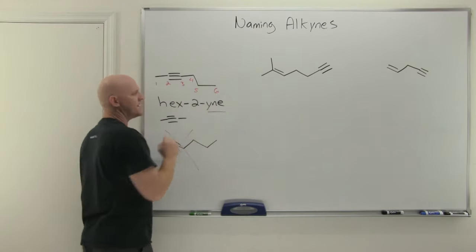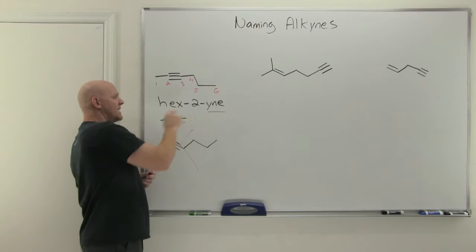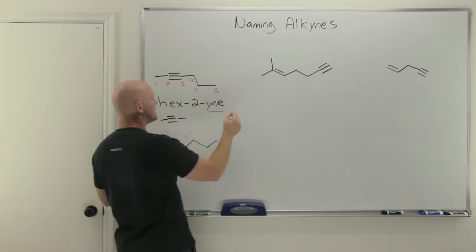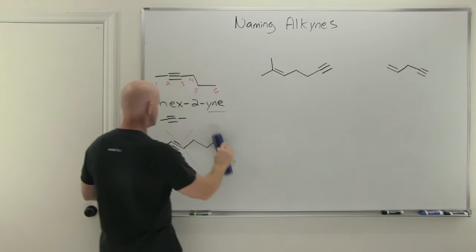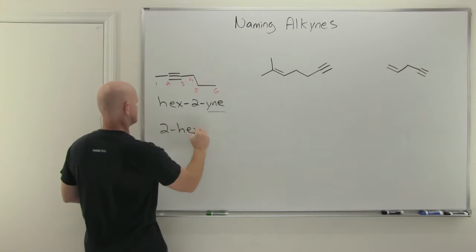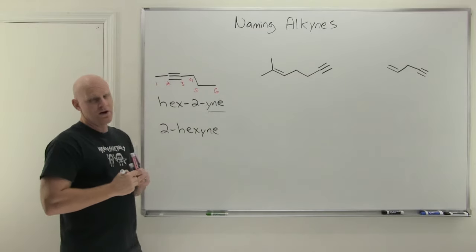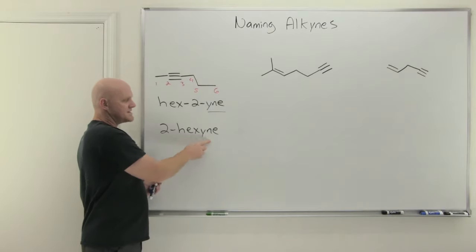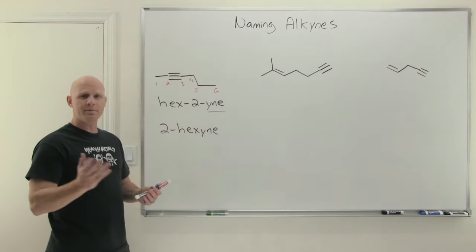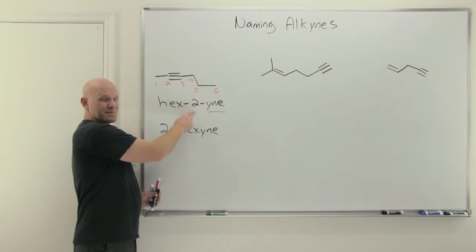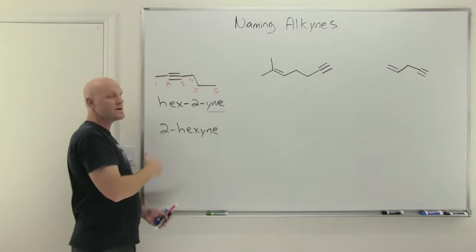We use the suffix Y-N-E for alkynes. If the alkyne is the only functional group named as part of the parent chain, you can put the number out in front as well, so this could also be named 2-hexyne. We'll find out shortly that if you've got more than one functional group named as part of the parent chain, which isn't super common but does happen, you can't put the numbers out in front. You have to put them in the middle of the parent chain.